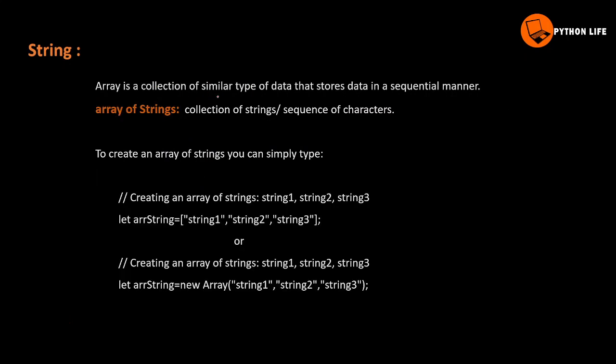An array is a collection of similar data types that stores data sequentially. If we have an array, we will add an array. Array of strings means a collection of strings — a sequence of characters. So a string contains a sequence of characters, and a sequence of characters is an array.